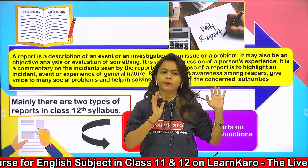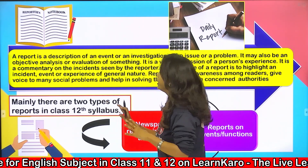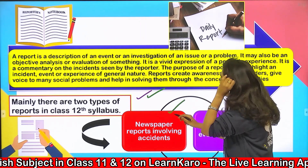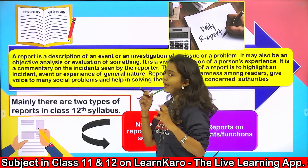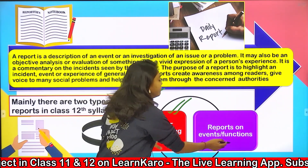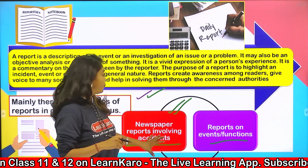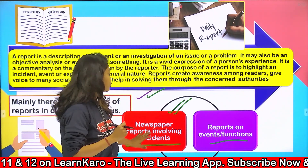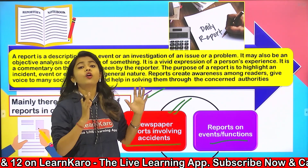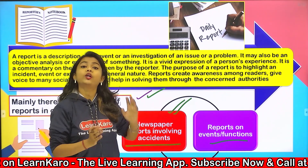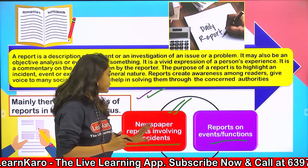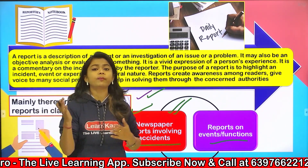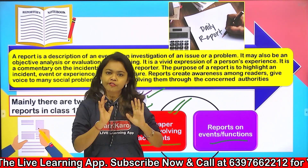Events good bhi ho sakti hain and bad bhi ho sakti hain. Mainly there are two types of reports in your Class 12 syllabus — sabse pehle hai reports for the newspaper involving accidents, and doosra hai reports on events and functions. Newspaper reports involving accidents mein kya hota hai — koi bhi aise report jo ki newspaper mein publish honi hai, usually about road accident ya koi mishap ya koi bad news. Aaj ke session mein hum log discuss karenge about the newspaper reports involving accidents, or next session mein hum log discuss karenge about the reports on events and functions.